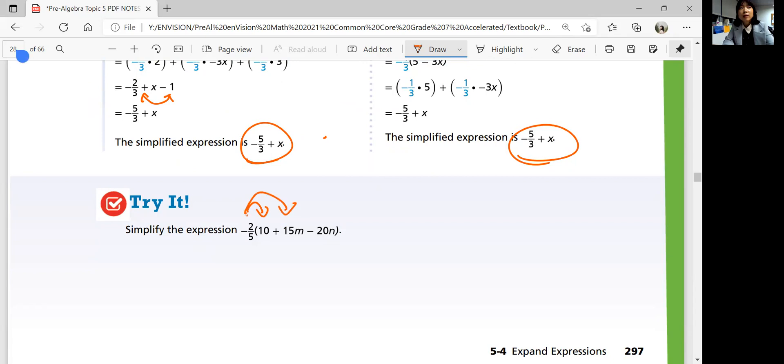Okay, are you ready? So distribute this out. Negative 2 over 5 times 10 plus negative 2 over 5 times 15m plus negative 2 over 5 times negative 20n, right?